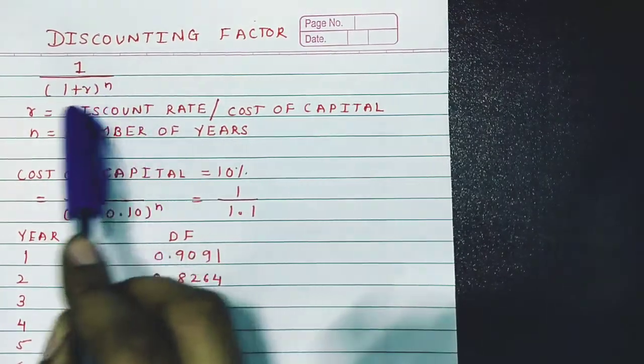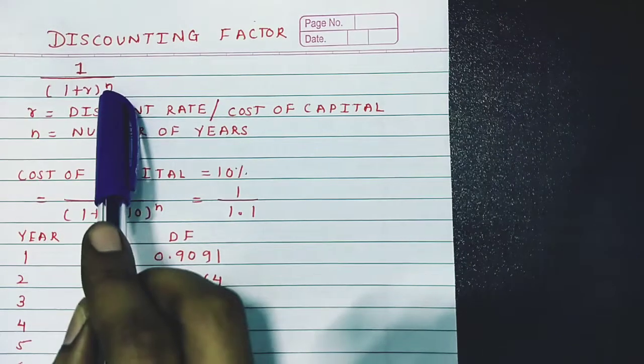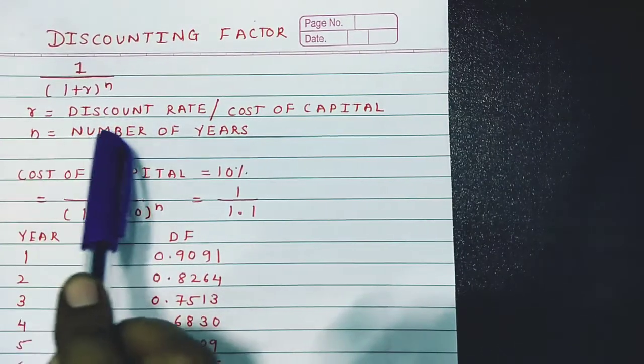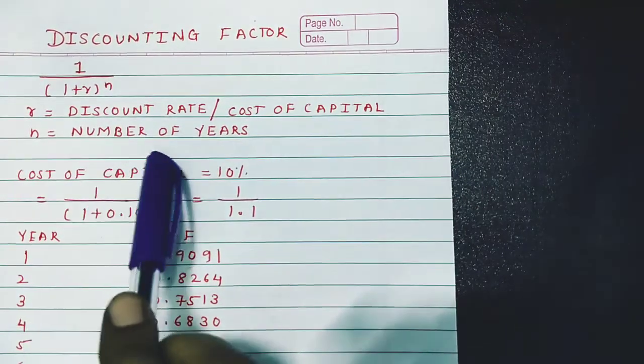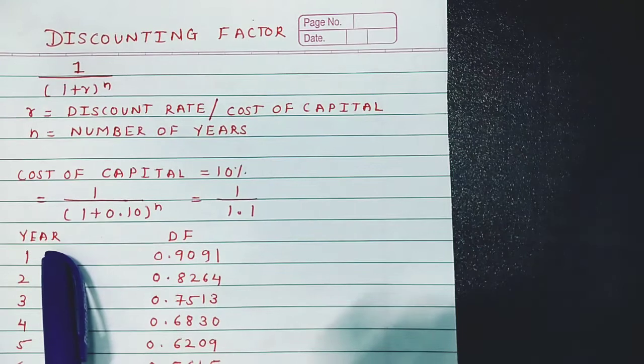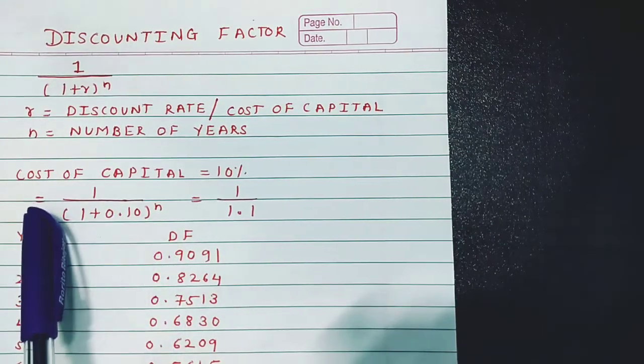1 divided by (1 + r) raised to n. Here, r stands for the discount rate or cost of capital, and n stands for the number of years. I have taken a very simple example: suppose...